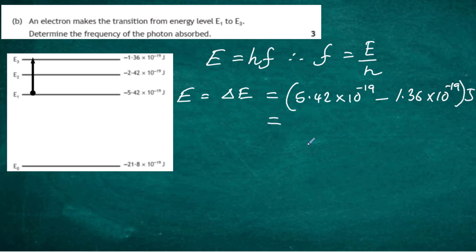So we do that in our calculator, we end up with an energy gap of 4.06 times 10 to the minus 19 joules. So that will be the energy of the photon, 4.06 times 10 to the minus 19 joules. And that will be the energy of the photon needed to promote the electron from E1 to E3.